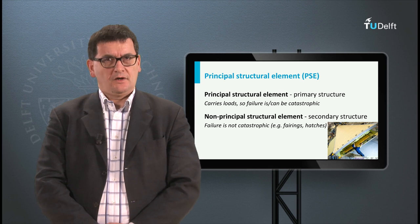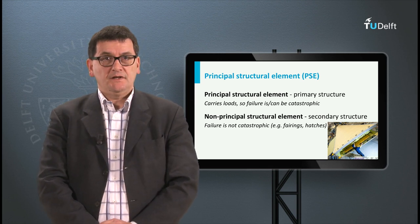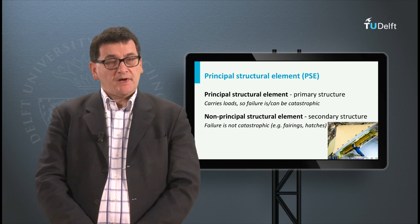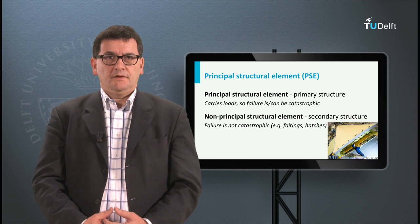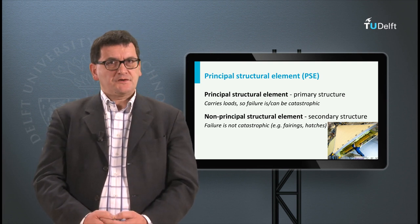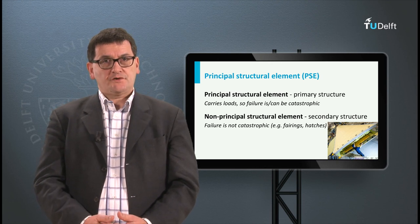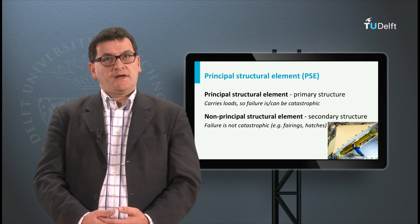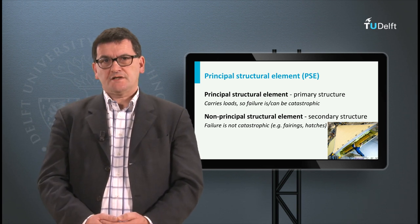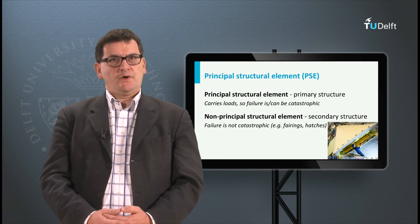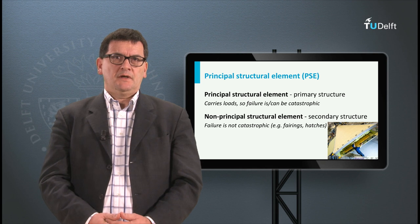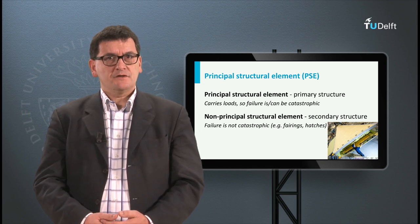Despite the fact that the skin is carrying loads, not all structural components participate evenly in the load distribution. Therefore we distinguish between primary and secondary structures. The primary structure carries the main load — damage or failure of an element of this part could cause a catastrophe. The elements of the primary structure are called PSEs, which means principal structural elements, and they need to be inspected regularly. The secondary structures take much smaller loads; they protect and are used for access to compartments. Examples include hatches and fairings, such as the fairing between the wing and the fuselage. Elements of the secondary structure are named non-principal structural elements.